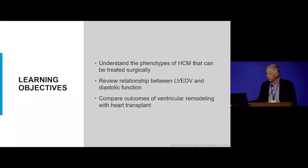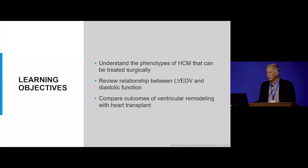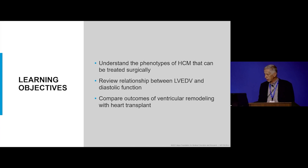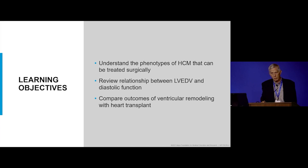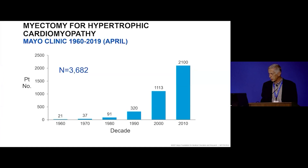The learning objectives are to understand the different phenotypes of hypertrophic cardiomyopathy that can be managed surgically, review the relationship between end-diastolic volume and end-diastolic function, and to compare the outcomes of this more conventional treatment for non-obstructive hypertrophic cardiomyopathy with heart transplant, which is really the only other surgery.